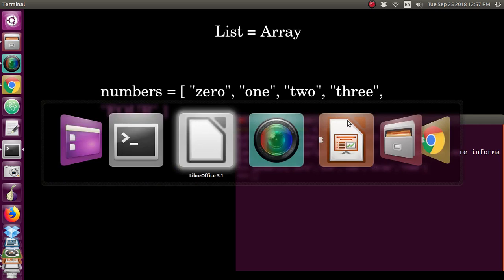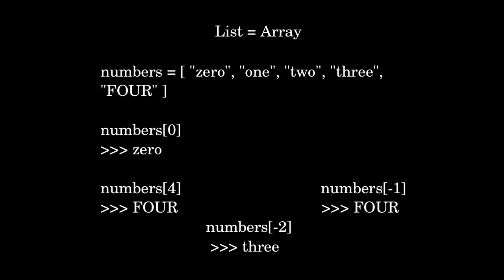One list is created. I can access the list by giving numbers[0]. The indexes go from 0, 1, 2, 3, 4 — you can create as many items as you want, but the index will always start from zero. So the index of the first item is 0.